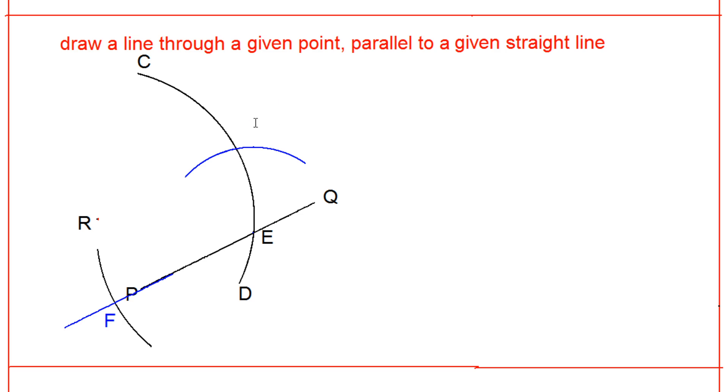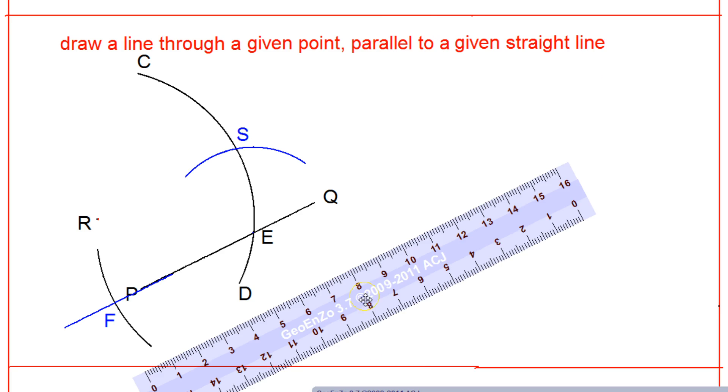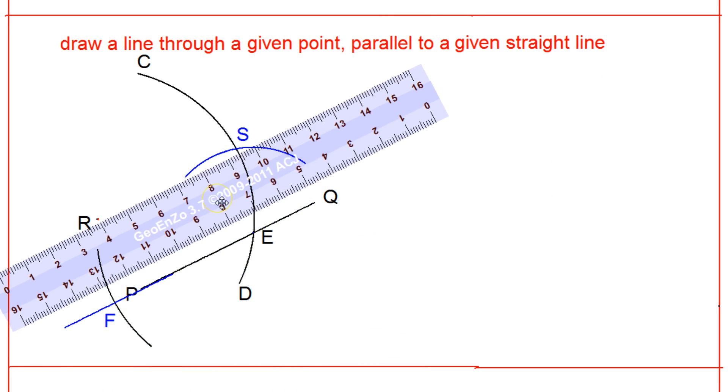Now you can connect your original R and the point S. This connector will give you a parallel line.